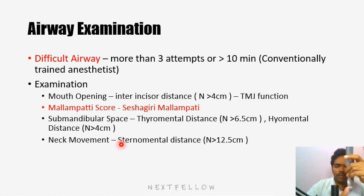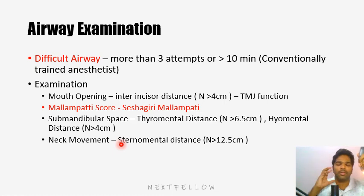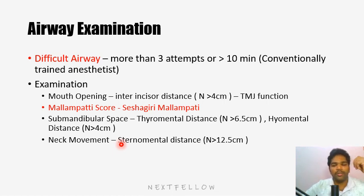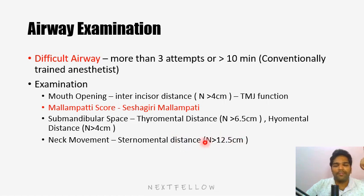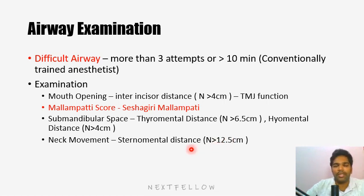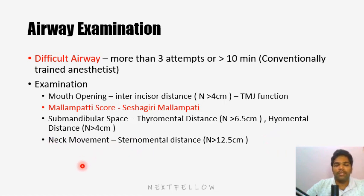From the laryngoscopy class, you would recall that we put the scope in, keep the tip inside the vallecula, lift the tongue, and push it into the submandibular space so you can see the glottis. To assess whether we can perform this maneuver, we evaluate the submandibular space adequacy using two measurements: thyromental distance and hyomental distance. Thyromental distance is measured from the thyroid cartilage to the mentum — it should be more than 6.5 centimeters or three finger breadths. Hyomental distance is from the hyoid bone to the mentum and should be more than 4 centimeters.